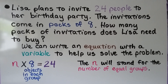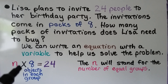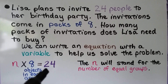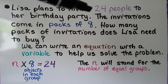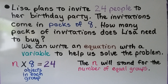Lisa plans to invite 24 people to her birthday party. The invitations come in packs of 8. How many packs of invitations does Lisa need to buy? We can write an equation with a variable to help solve the problem: n times 8 is equal to 24, where n stands for the number of packs.